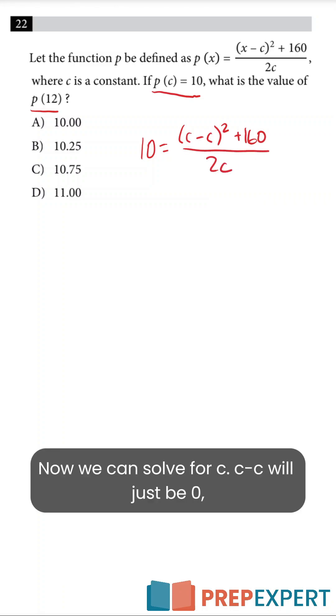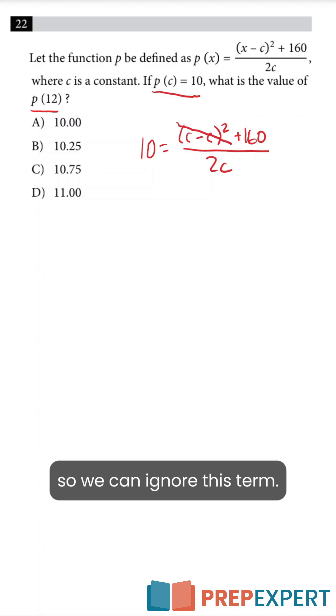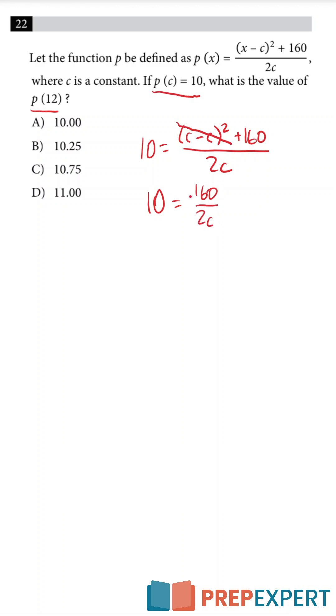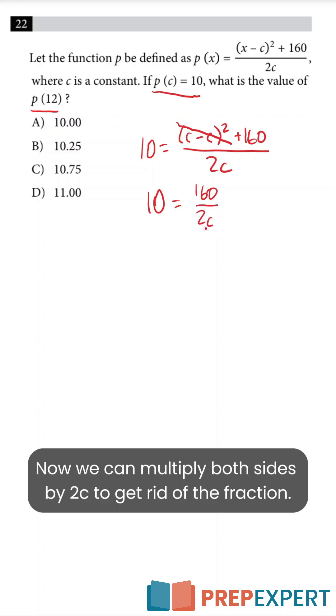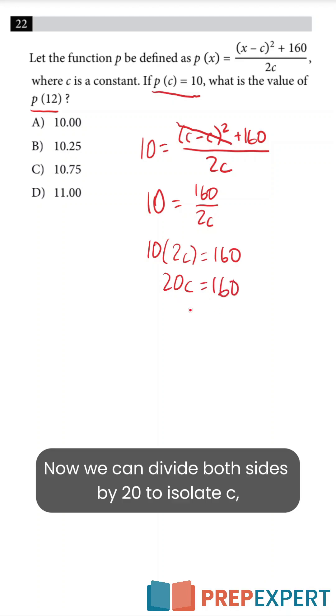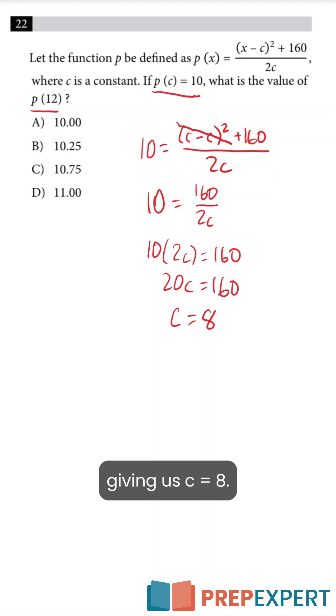Now we can solve for c. c minus c will just be zero, so we can ignore this term. Our new equation will be 10 equals 160 over 2c. Now we can multiply both sides by 2c to get rid of the fraction. 10 times 2c equals 160, or 20c equals 160. Now we can divide both sides by 20 to isolate c, giving us c equals 8.